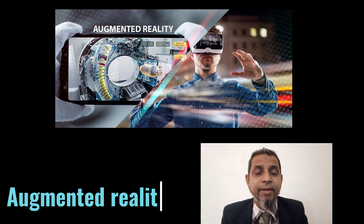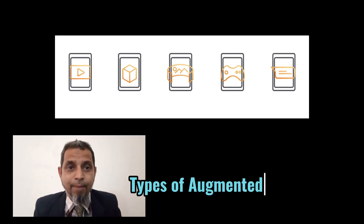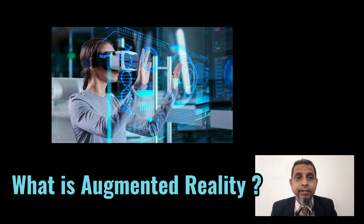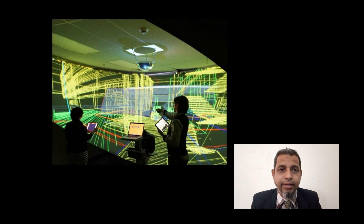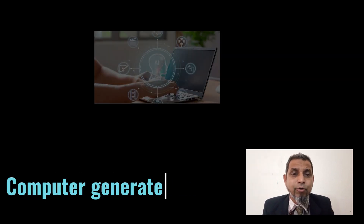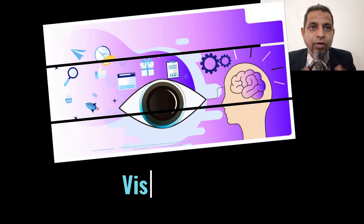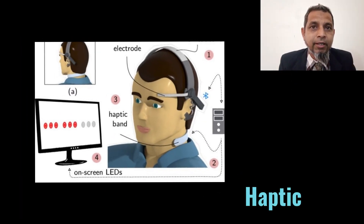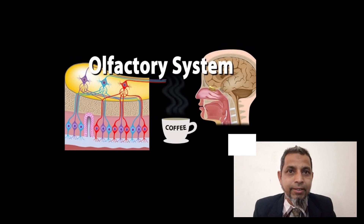Point number one: what is augmented reality? And point number two: what are the types of augmented reality? Coming to point number one — what is augmented reality? Augmented reality, AR, is the real-time experience that combines the real world with computer-generated content. This content includes visual, auditory, haptic, somatosensory, and olfactory elements.